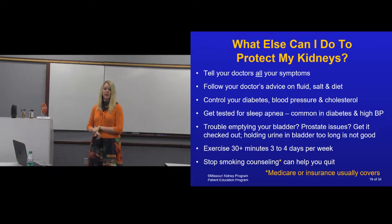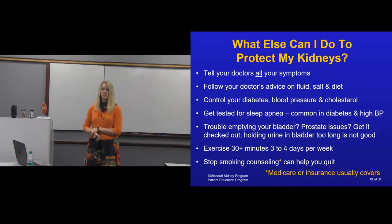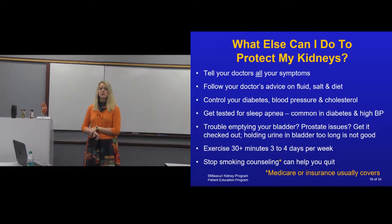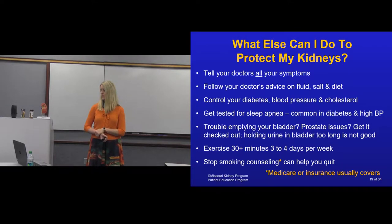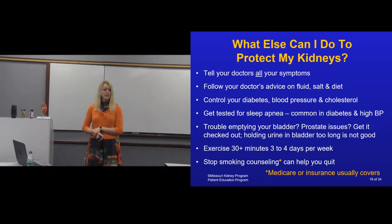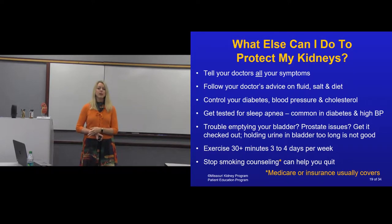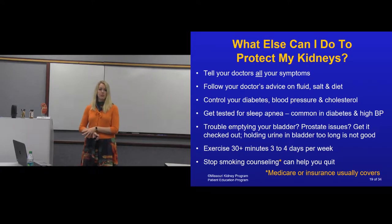If you have diabetes, your A1C level should be around 7 — that's your three-month average blood sugar — and keeping it there can slow the progression of kidney disease. We also want your blood pressure and cholesterol controlled, which slows both kidney disease and heart disease. The number one cause of death for kidney patients is actually heart disease, not kidney failure. If you snore loudly, wake yourself up at night, or have sleep problems, get tested for sleep apnea. A CPAP or BiPAP machine can supply your organs, including your kidneys, with more oxygen to help keep them healthy.